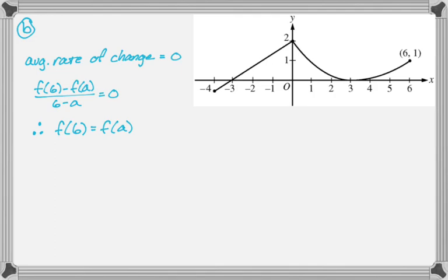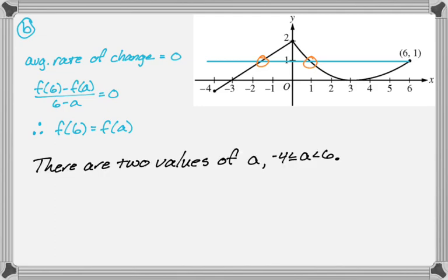f of 6, we're actually given the point 6, 1 on the graph. So I'm going to go across there. And you can see that there are two places where this happens. So I'm going to say there are two values of a where a is between negative 4 and 6. So I have that work there, which I think justifies it.